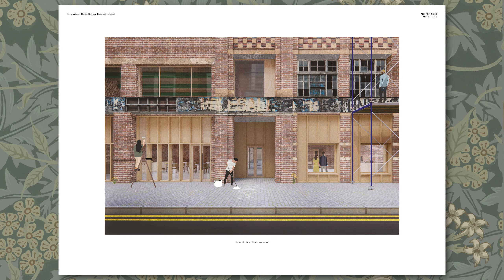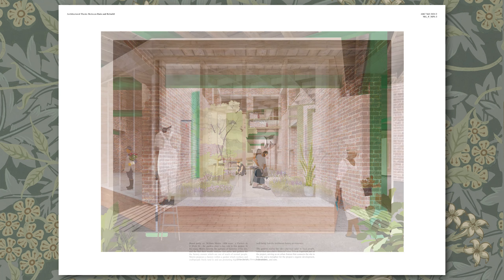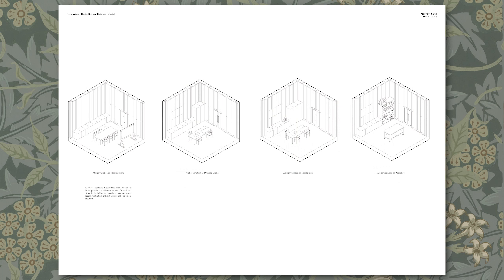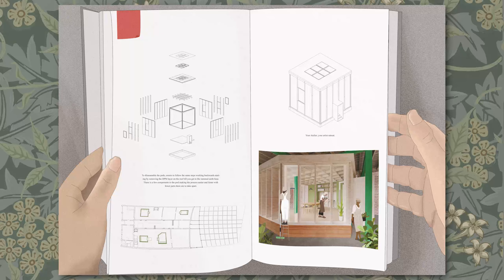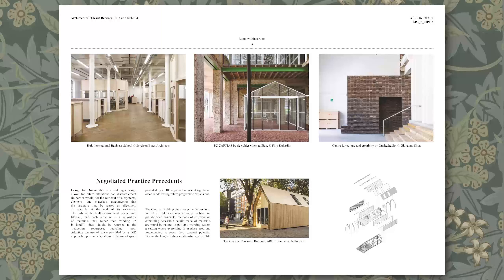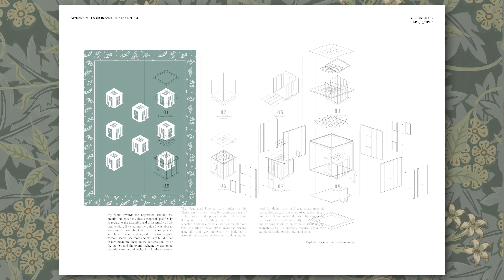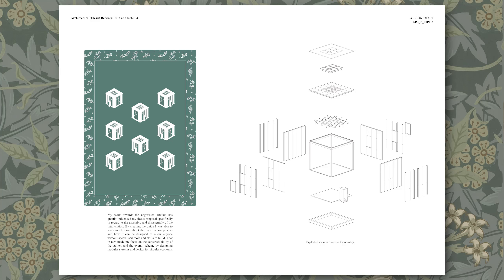These are by far some of the prettiest and richest renders I've ever created — I was so happy with them. I also created exonometrics showing how the atelier might be used by different people: as a meeting space, a drawing studio, a textile room, or a workshop. It's really a multifunctional space. In addition to the thesis, we also have a course called Negotiated Practice where you create something that relates to your thesis. I decided to create a booklet that sums up the process of constructing these ateliers, since they'll be self-built by the community — a document summarizing the assembly and disassembly of the units. This included more research into precedents for design for assembly and disassembly, and it was important to explain how your Negotiated Practice work builds on your thesis.